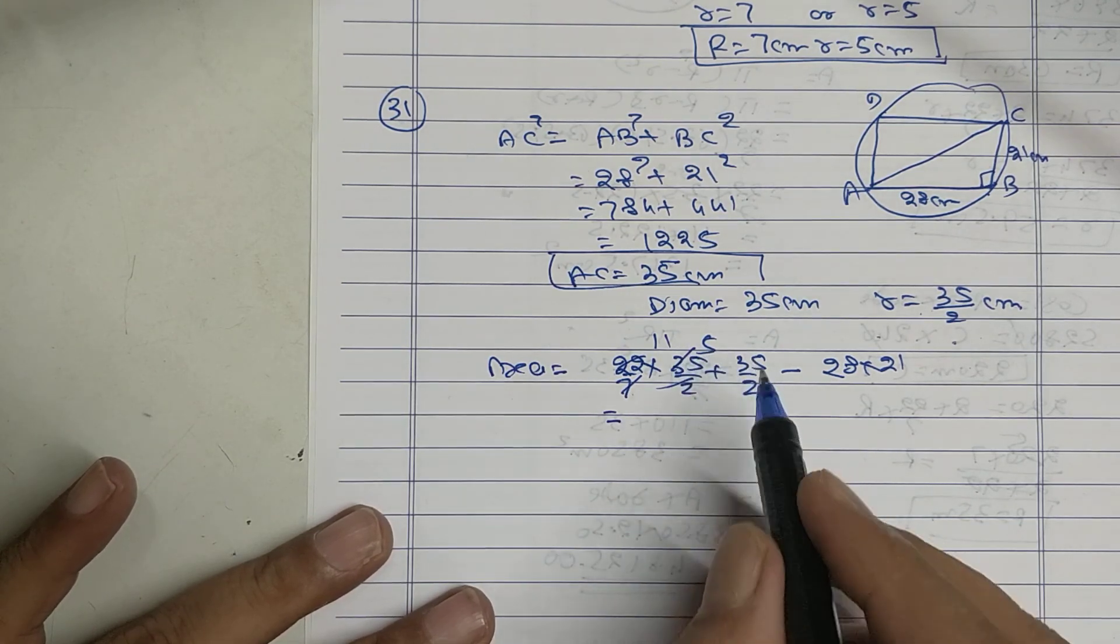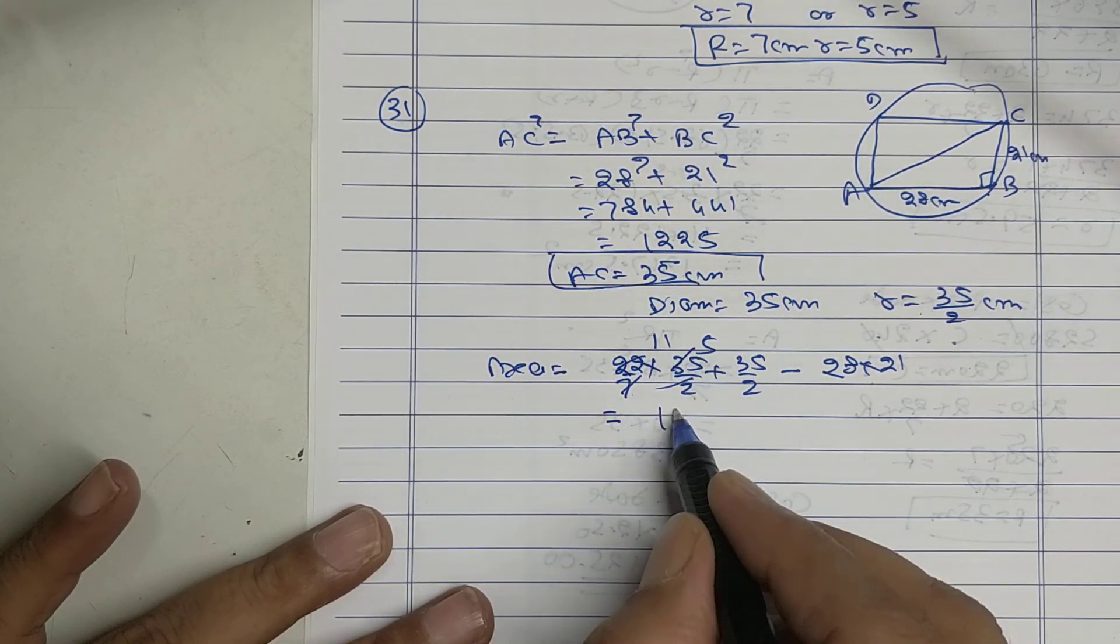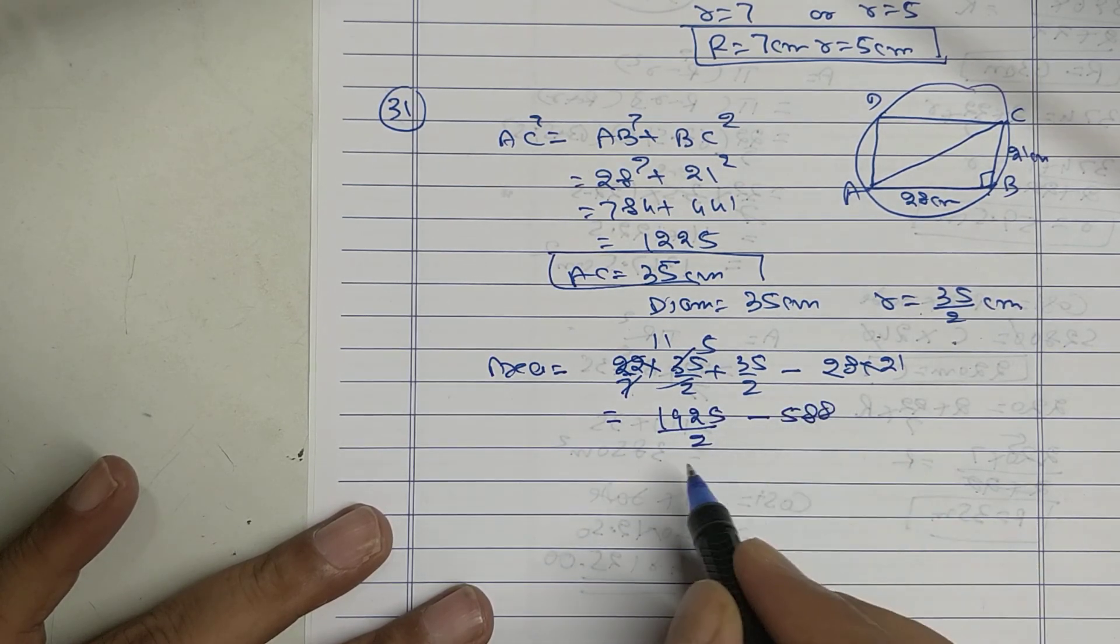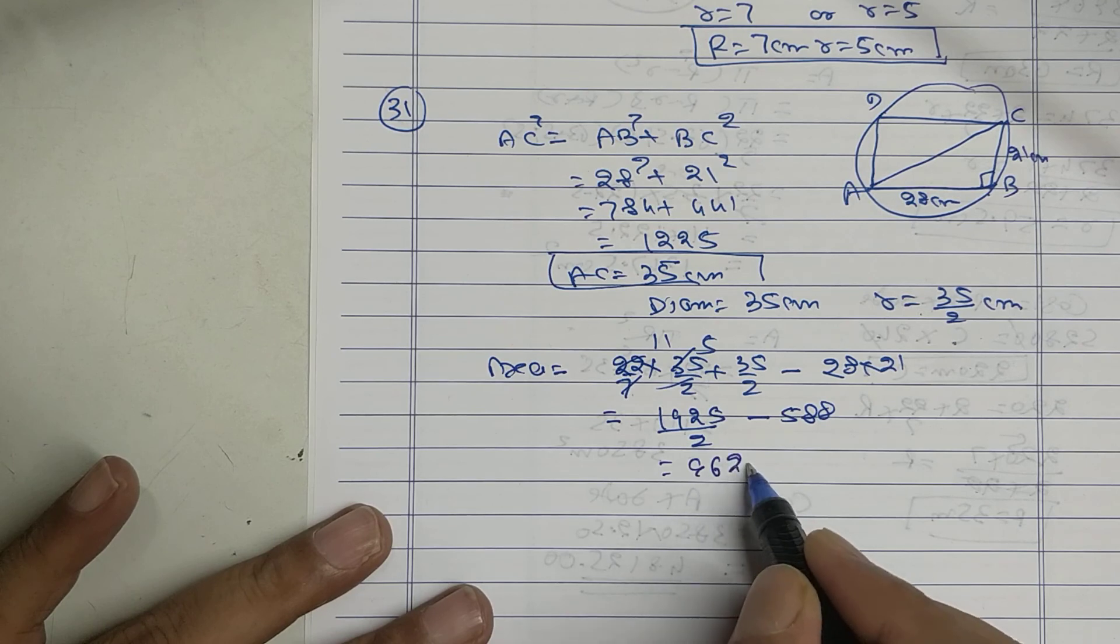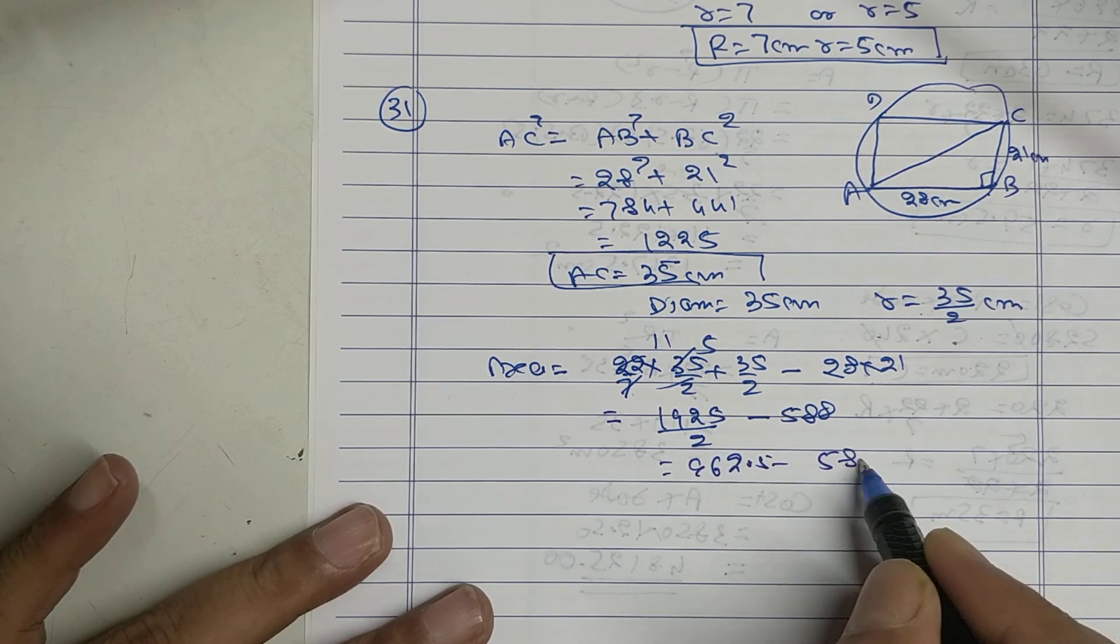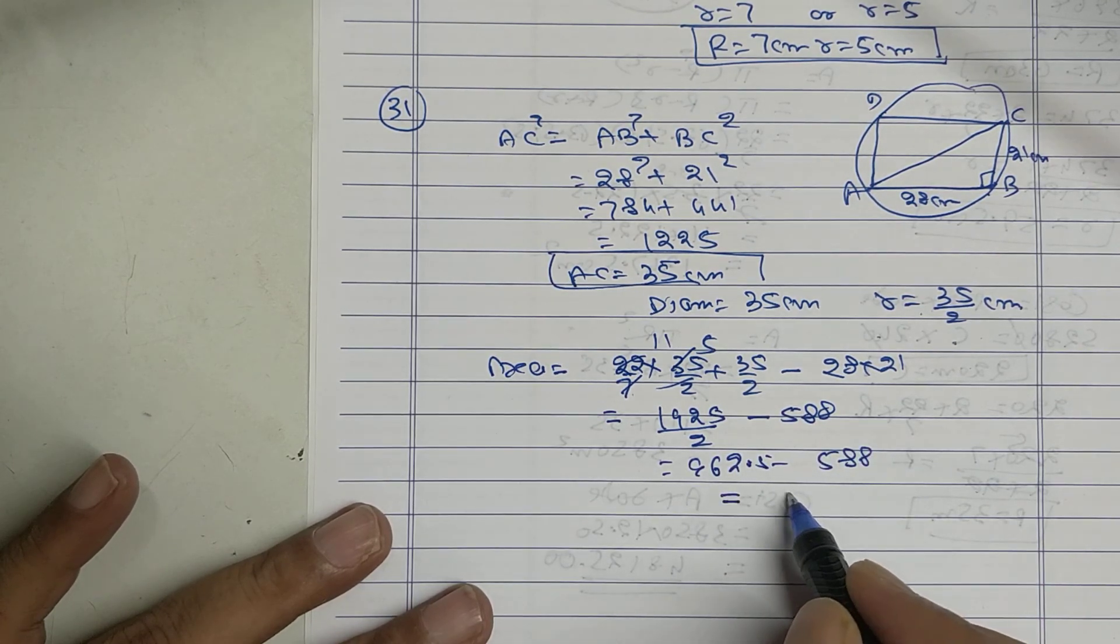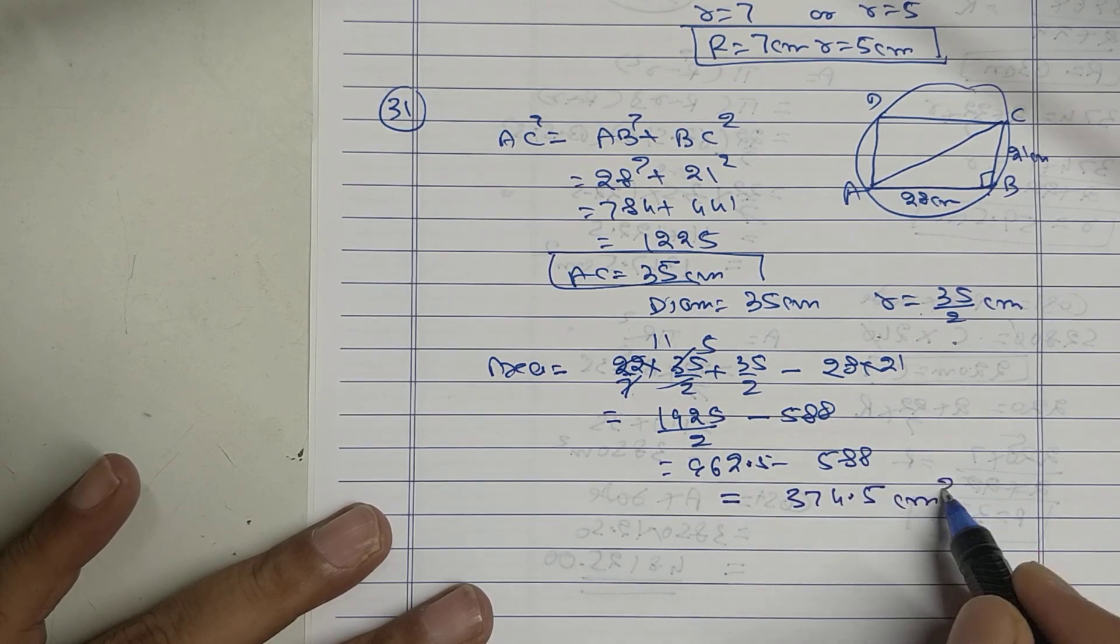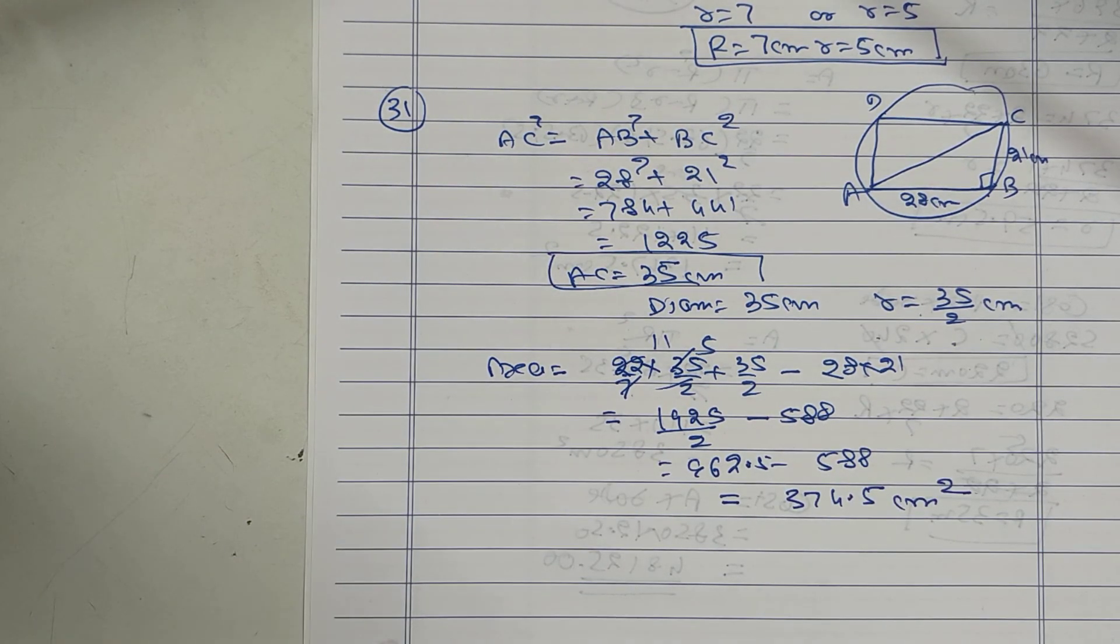962.5 minus 588 equals 374.5 centimeter square. Video ends.